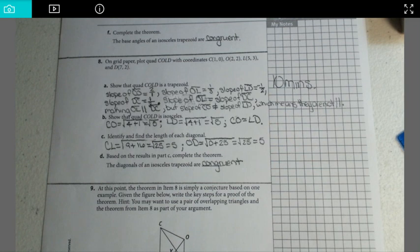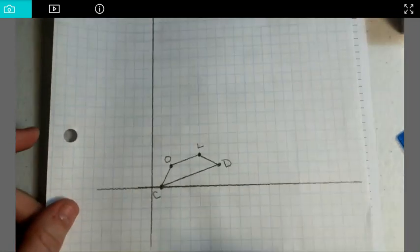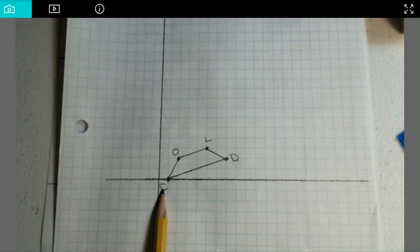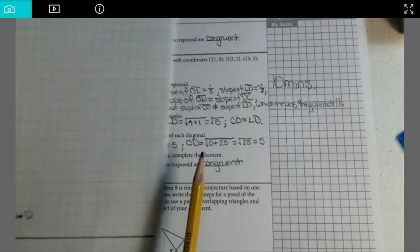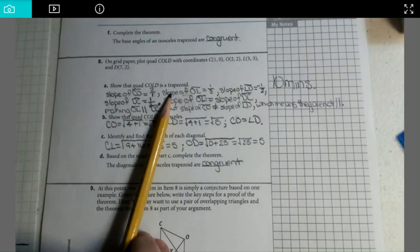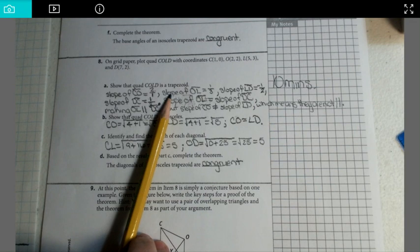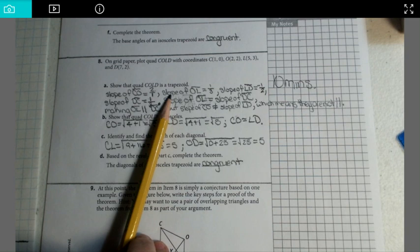Question number 8 started by asking us to graph this on a piece of grid paper. So I did. You can see I said C-O-L-D. In order for us to prove that it's a trapezoid, we must prove that a pair of sides are parallel and the other pair of sides are not parallel.